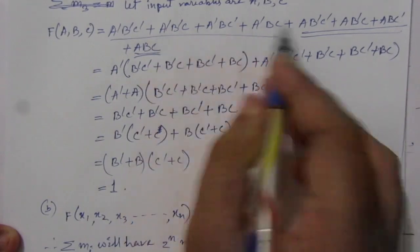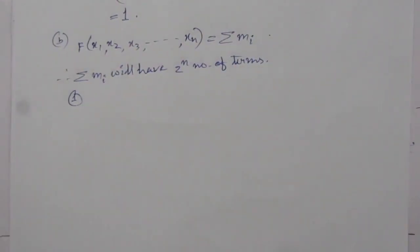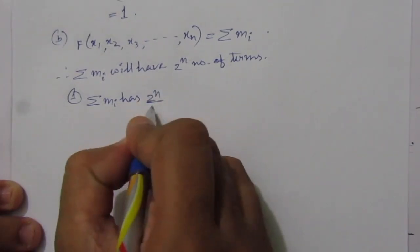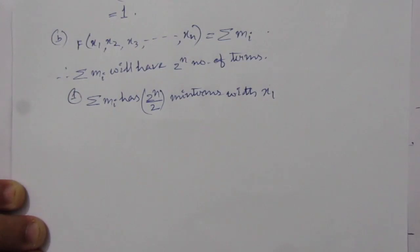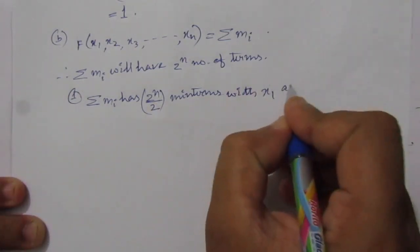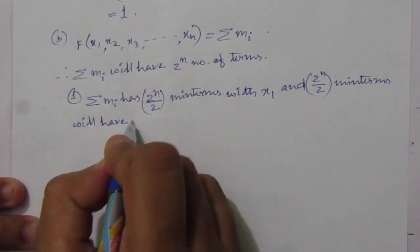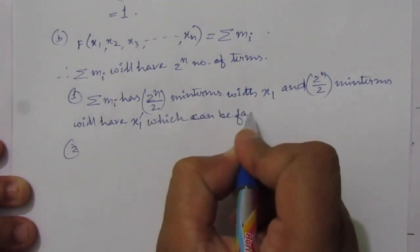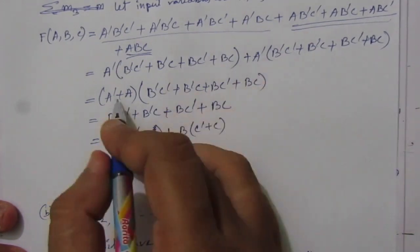From here we can see that half of the terms have x1 common and the other half have x1-bar common. So step 1 will be: after writing the sum of minterms form, the sum of m_i has 2^(n/2) minterms with x1 and 2^(n/2) minterms with x1-bar, which can be factored and removed. We have seen in the previous case that a and ā are factored out and removed.